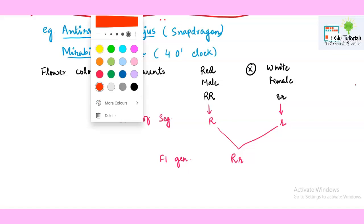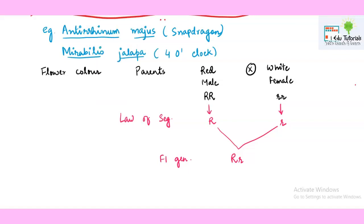If you have not seen my video on law of dominance please do watch it because then only you will be able to understand the differences. See here the genotype is capital R small r. If it would have been a law of dominance then the expression here would have been red. But in these plants the expression is pink.